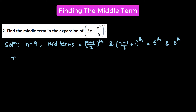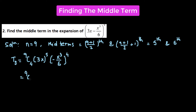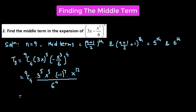For T5: 9C4, times x raised to the power of 9 minus 4 which is 5, times (−x³/6) raised to the power of 4, which equals 9C4 times 3⁵ times x⁴ times (−1)⁴ times x¹², divided by 6⁴. Plugging in all these values, that gives us 189/8 times x raised to the power of 5 + 12 = 17. So T5 = (189/8)x¹⁷.